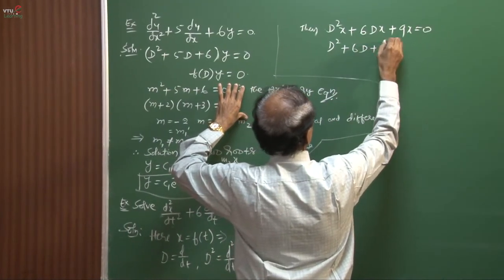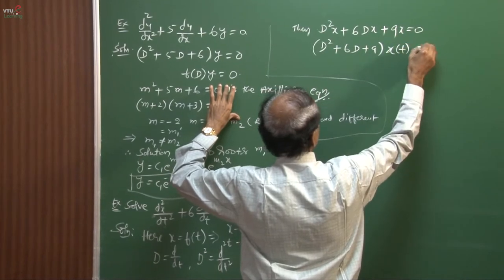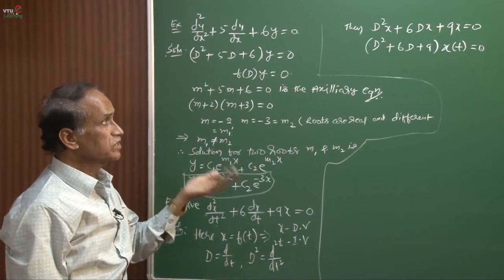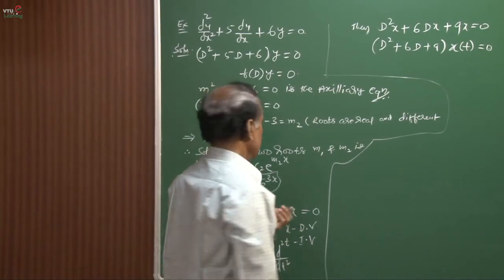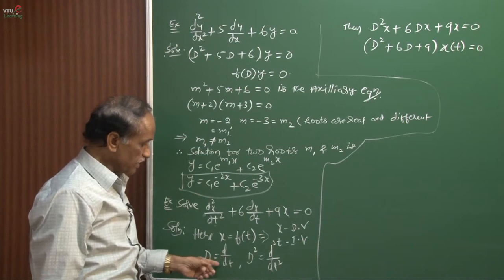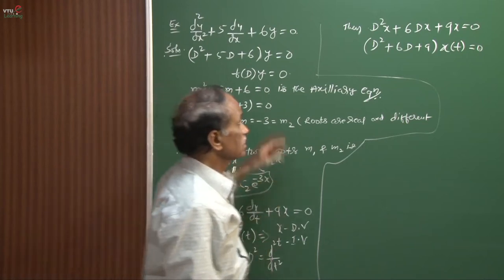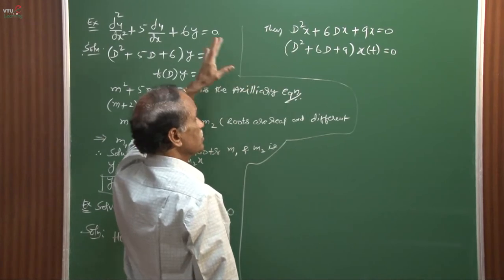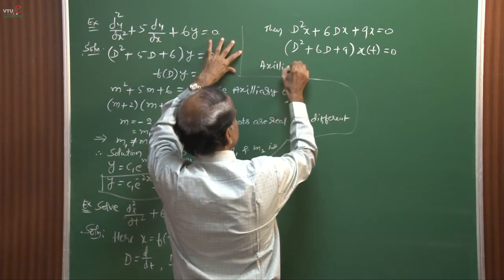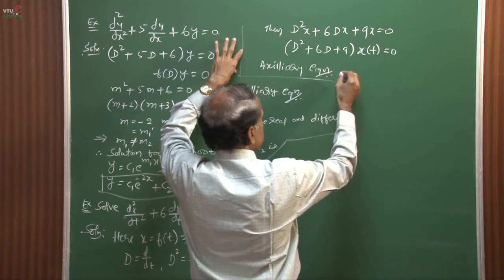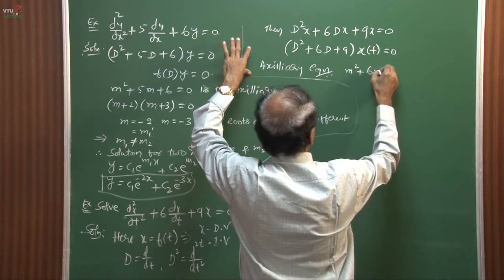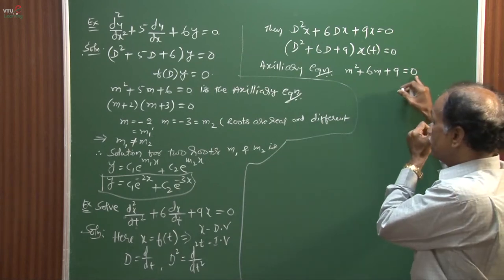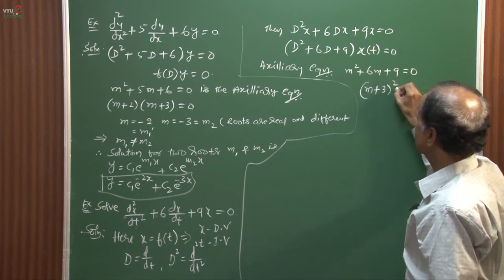So (D² + 6D + 9) operating on x(t) = 0, where D represents first-order derivative and D² represents second-order derivative — this is the linear differential operator. The auxiliary equation is m² + 6m + 9 = 0, which can be written as (m + 3)² = 0. Alternatively, using the algebraic formula m = (−b ± √(b²−4ac))/(2a), you will again get two repeated numbers.